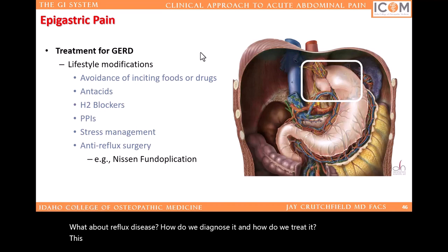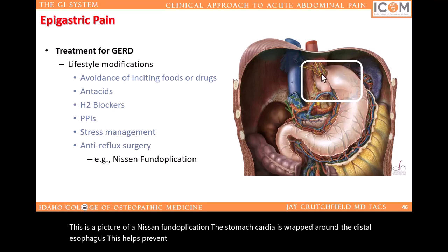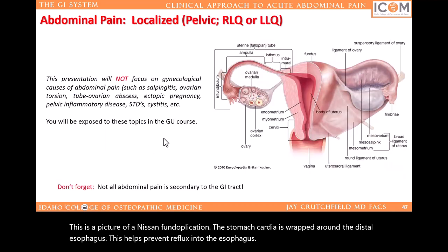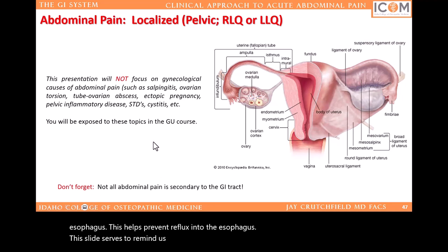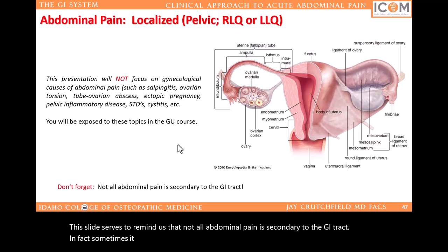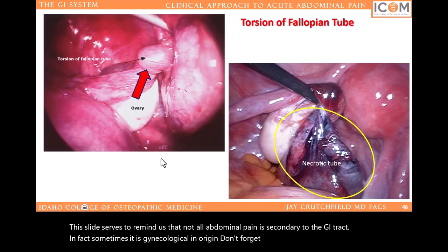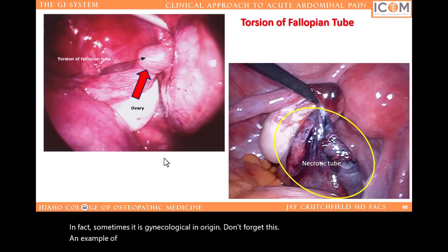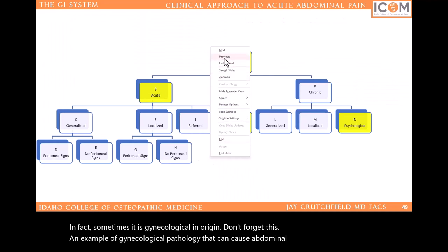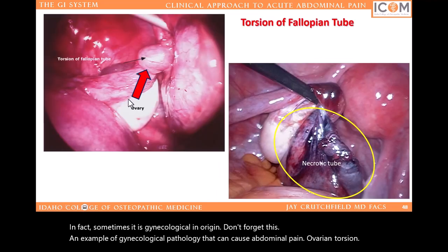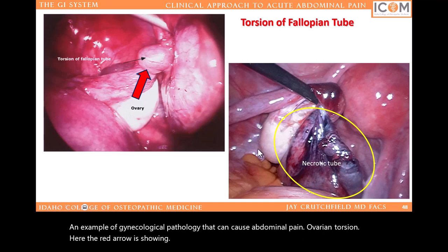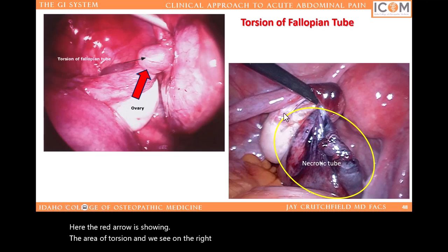This slide serves to remind us that not all abdominal pain is secondary to the GI tract — sometimes it is gynecological in origin. Don't forget this. An example of gynecological pathology that can cause abdominal pain is ovarian torsion. Here, the red arrow is showing the area of torsion, and on the right we see the necrotic fallopian tube.